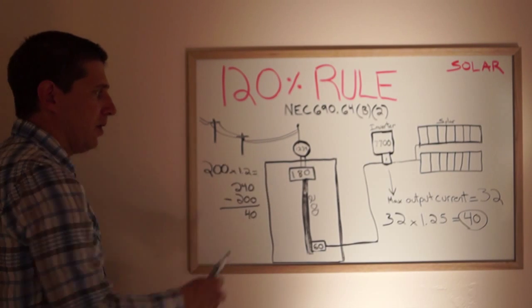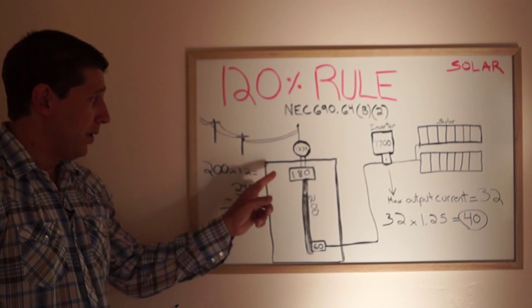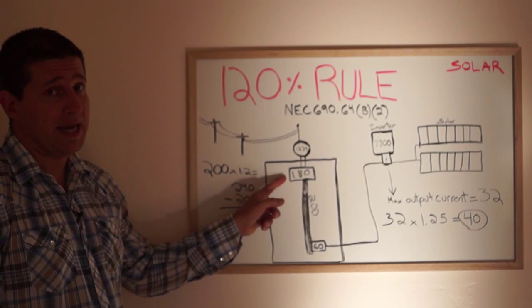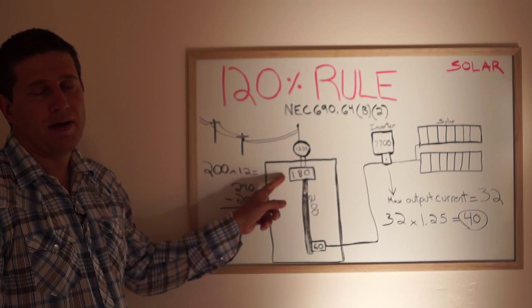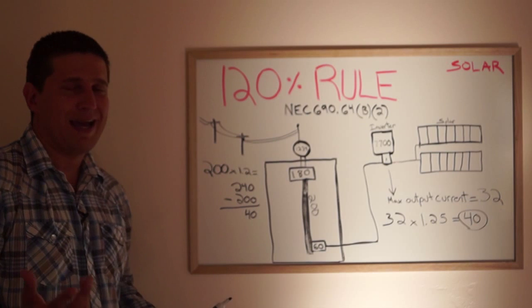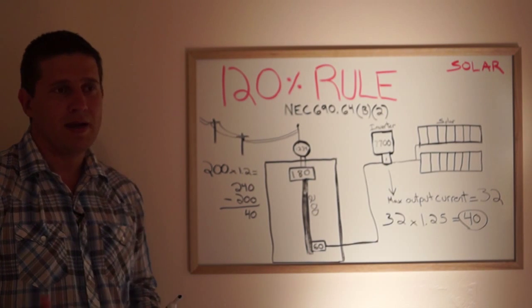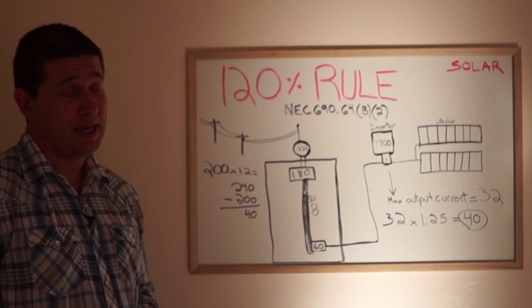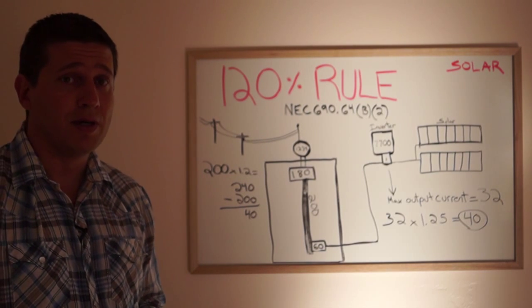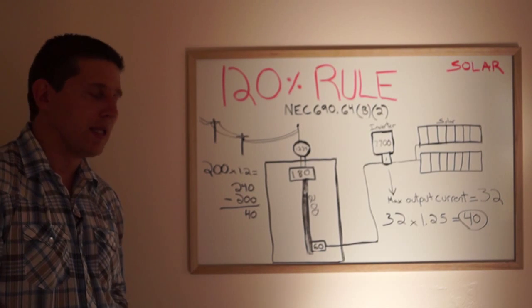However, we do have to be careful that at night time when the solar is not producing any power that we don't consume more than 180 amps. Or else we could be at fault that this 180 amp breaker might trip at times that we'd rather it not. Perhaps at 9 or 10 o'clock when a spa turns on. Maybe there's a sauna, electric vehicle.